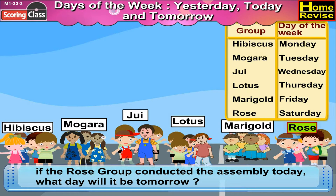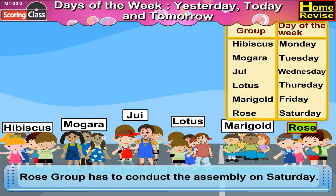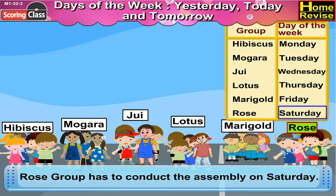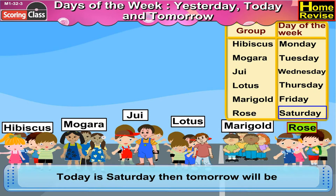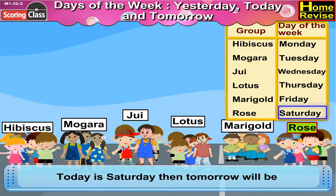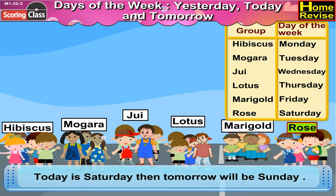If the Rose group conducted the assembly today, what day will it be tomorrow? Let's see — the Rose group has to conduct the assembly on Saturday. If today is Saturday, then tomorrow will be — can you write it? Sunday, of course!